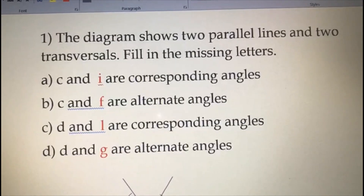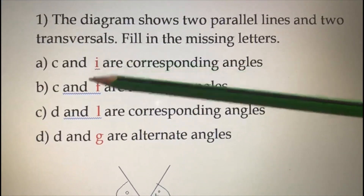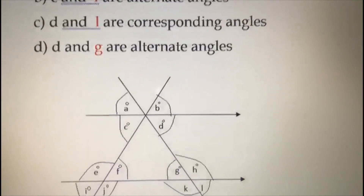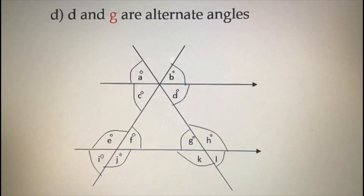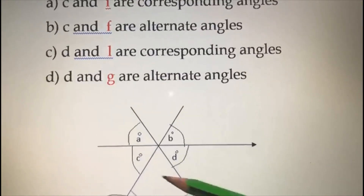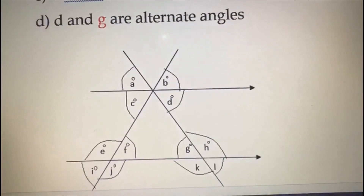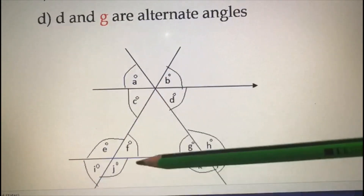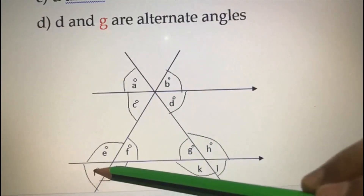Now let's look at a question. The diagram shows two parallel lines and two transversals. You have to fill in the missing angles — the red letters are the missing ones. See here: C and dash are corresponding angles. Whenever you get corresponding angles, think about F. Drawing F here — C corresponding gives us I. So C and I are corresponding angles.